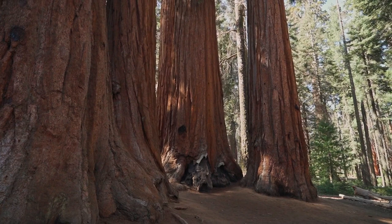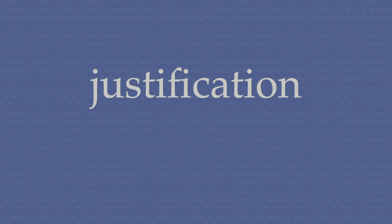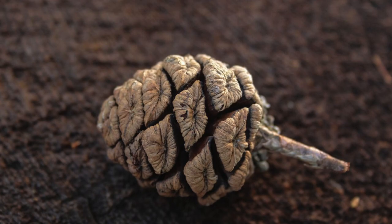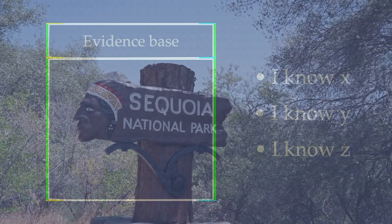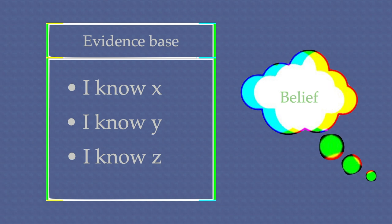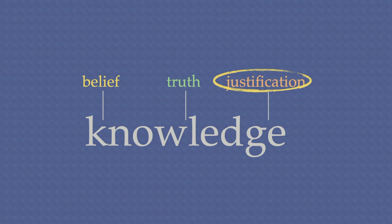Notice the change of direction here. Instead of explaining knowledge in terms of belief — a justified true belief — Williamson is explaining belief in terms of knowledge: a belief is an attempt at knowledge, treating something as if you know it. Consider justification. How would I be justified in believing there's a sequoia in front of me? Well, I might know that sequoias have small rounded cones, I might know that sequoias have a distinctive red shreddy bark, and it would certainly help to know that I am standing in Sequoia National Park. In short, my evidence base is composed of the things I know. And if any belief of mine is justified, it will be justified by any relevant knowledge I might have. So Williamson has turned things around so that knowledge is helping to explain justification — it's only what I know that can do the work of justifying my beliefs.